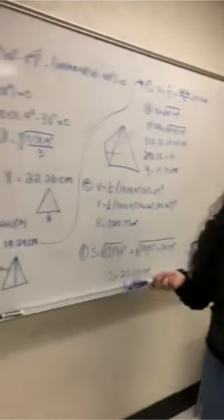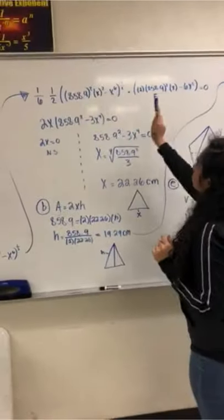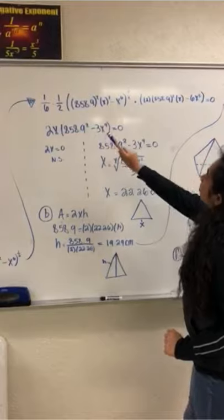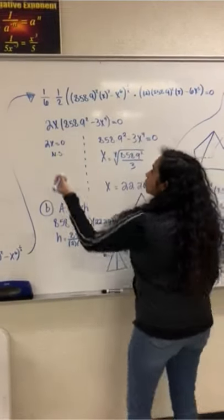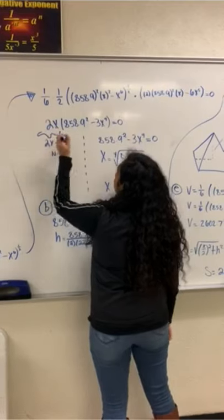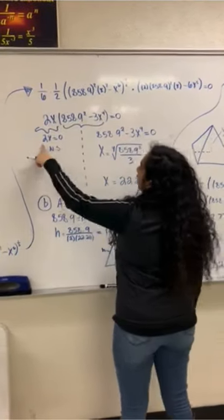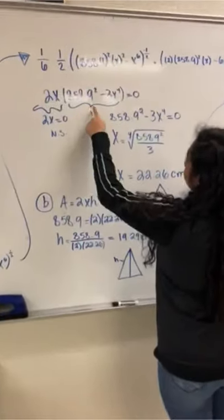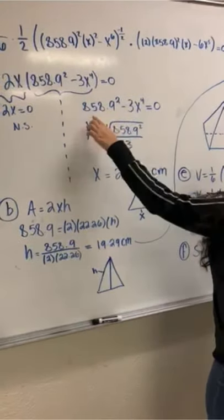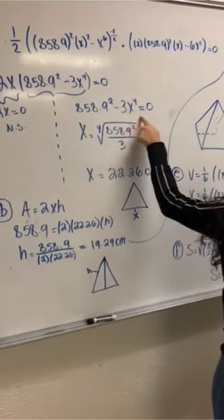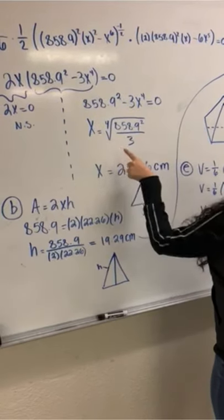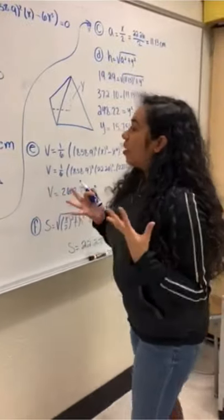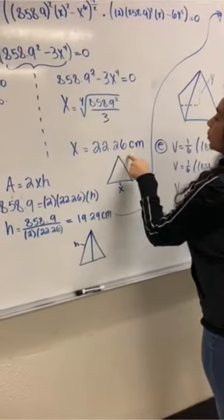Next we found the derivative. Using that formula, the derivative gave us: 2x times (858.9 squared minus 3x to the power of 4) = 0. Since 2x = 0 is not a valid solution, we used the other factor: 858.9 squared minus 3x to the fourth = 0, giving x = the fourth root of (858.9 squared over 3), which equals x = 22.26 centimeters.